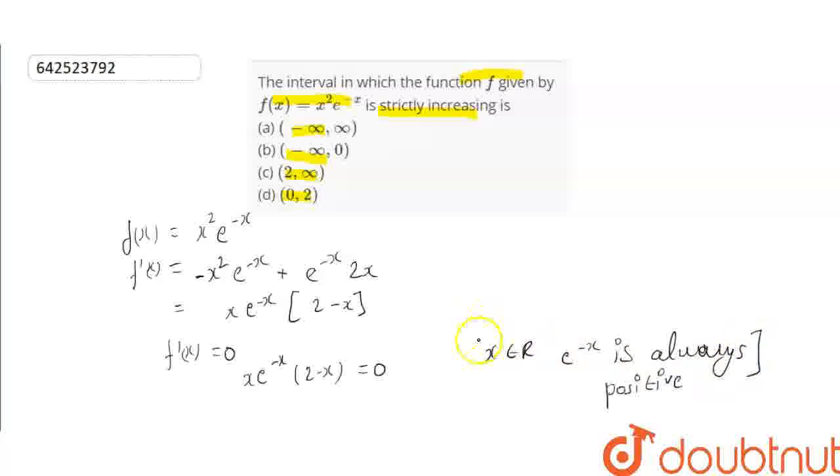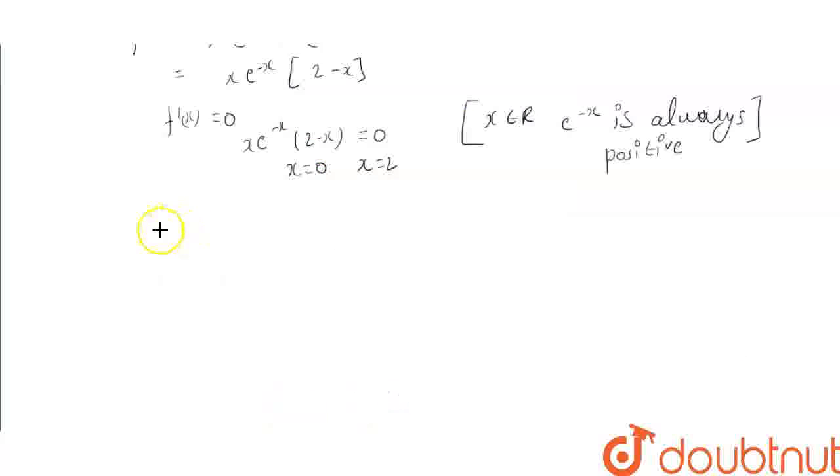This means x can have two values: x = 0 and x = 2. Now we will plot these points on the real line: -∞, 0, 2, ∞.